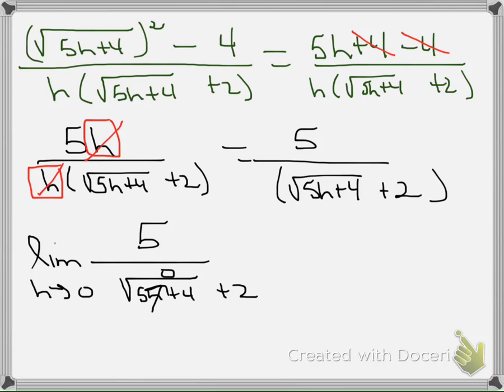And so that's 5 times 0. So what I have under the radical now, I'm ready to just finish this thing. It's 5 over the square root of 4 plus 2. Square root of 4 is 2 and 2 and 2 is 4. So this is 5 fourths.